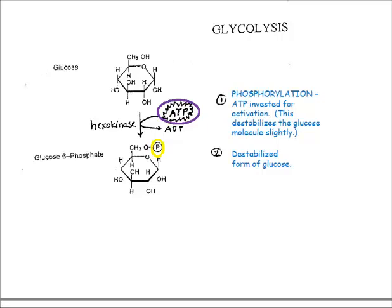It all begins with a glucose molecule. The glucose molecule gets converted to glucose 6-phosphate when an ATP molecule donates one of its phosphates to the glucose, resulting in ADP. The glucose molecule is now phosphorylated — it has a phosphate group attached to it — and this destabilizes the glucose, like a boxer getting hit and stumbling a bit. This destabilizes the bonds of the glucose just slightly.